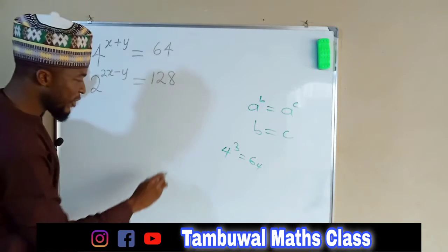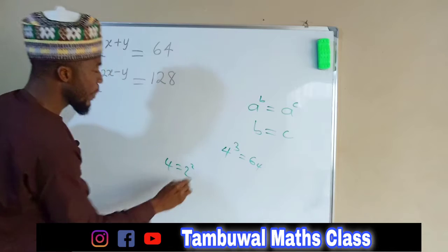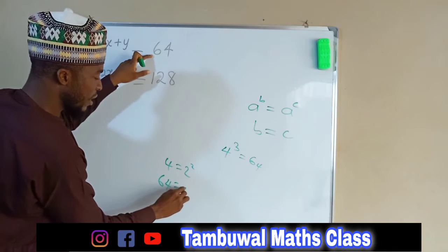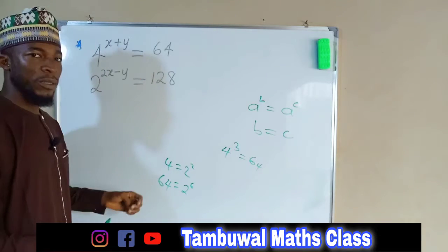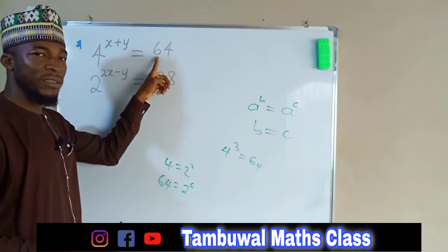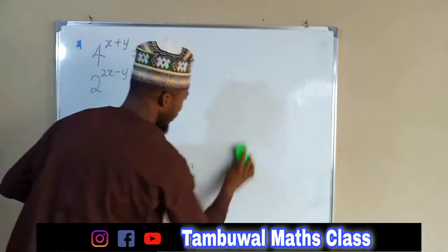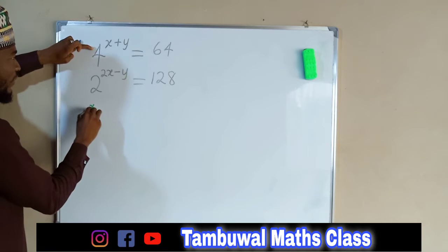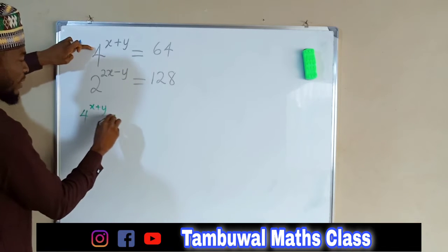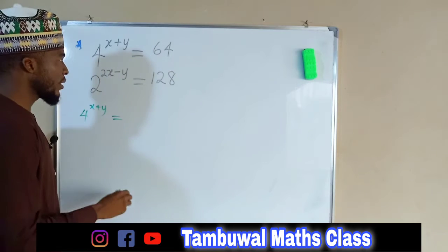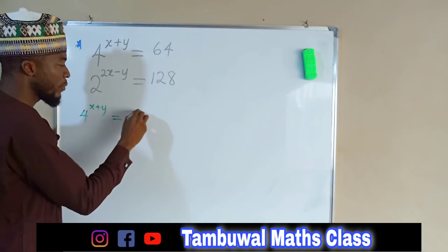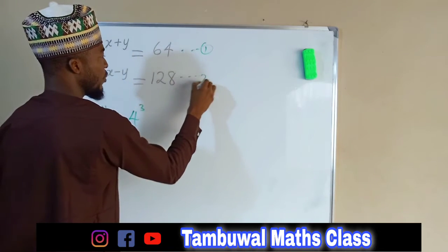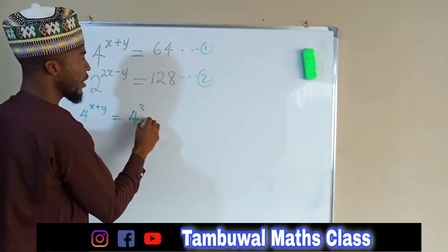You can also transform this 4 into 2 to the power 2, and 64 can also be written as 2 to the power 6. But since 4 can satisfy this, we don't have to transform it into base 2. From the left hand side we have 4 to the power of X plus Y, and this is equal to 64, and 64 can be written as 4 to the power 3. This is equation 1 and equation 2, and we can call this equation 3.